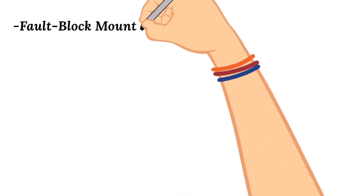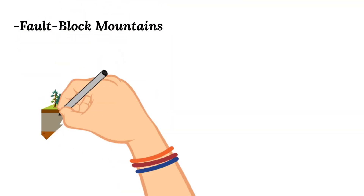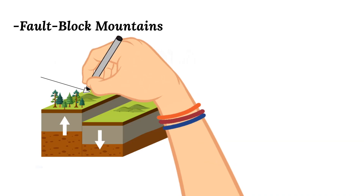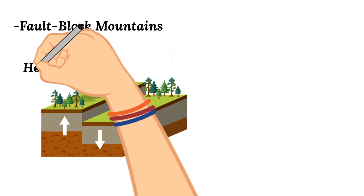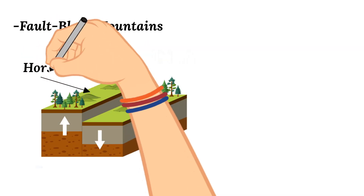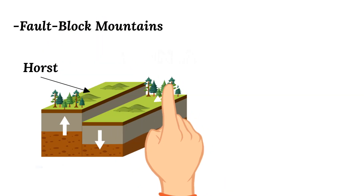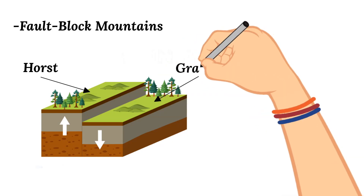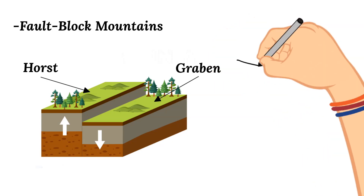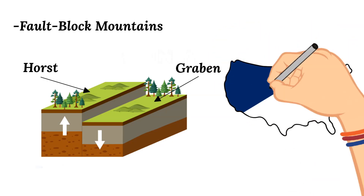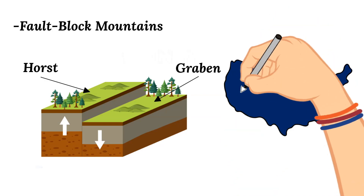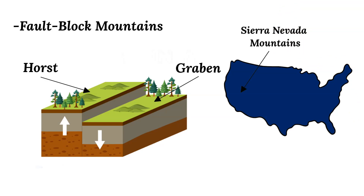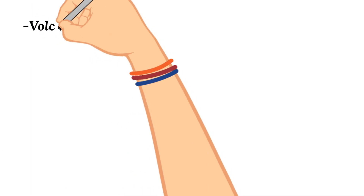Next up, let's talk about fault block mountains. Fault block mountains are formed along fault lines where some large blocks of rock are forced upwards while others are forced down. This higher area of rock is typically called the Horst, and the lower area is called the Graben. An example of these types of mountains are found in the Sierra Nevada mountain range, located specifically in the western United States.